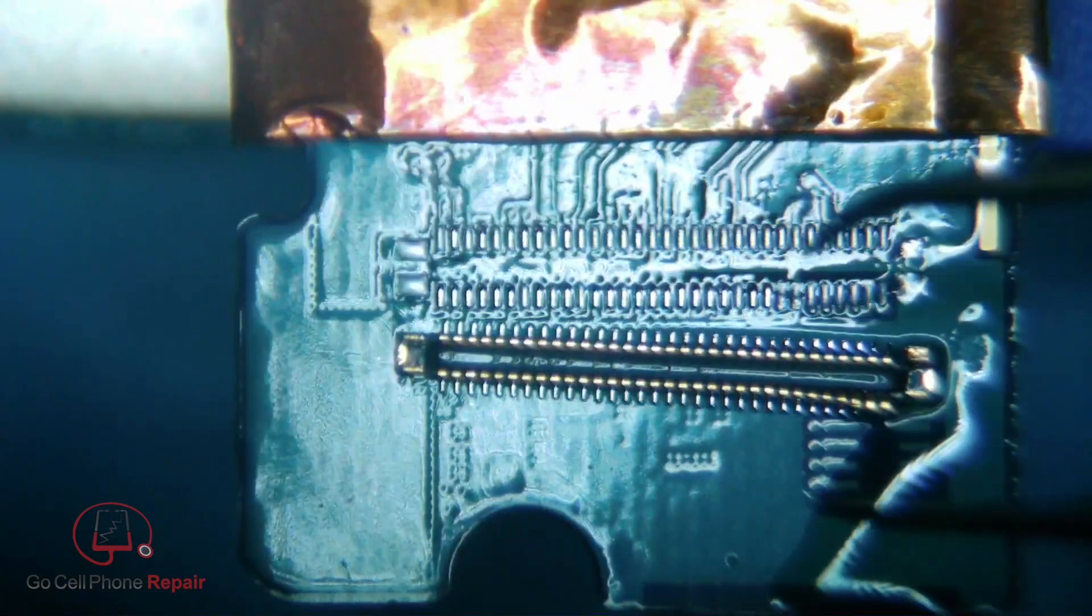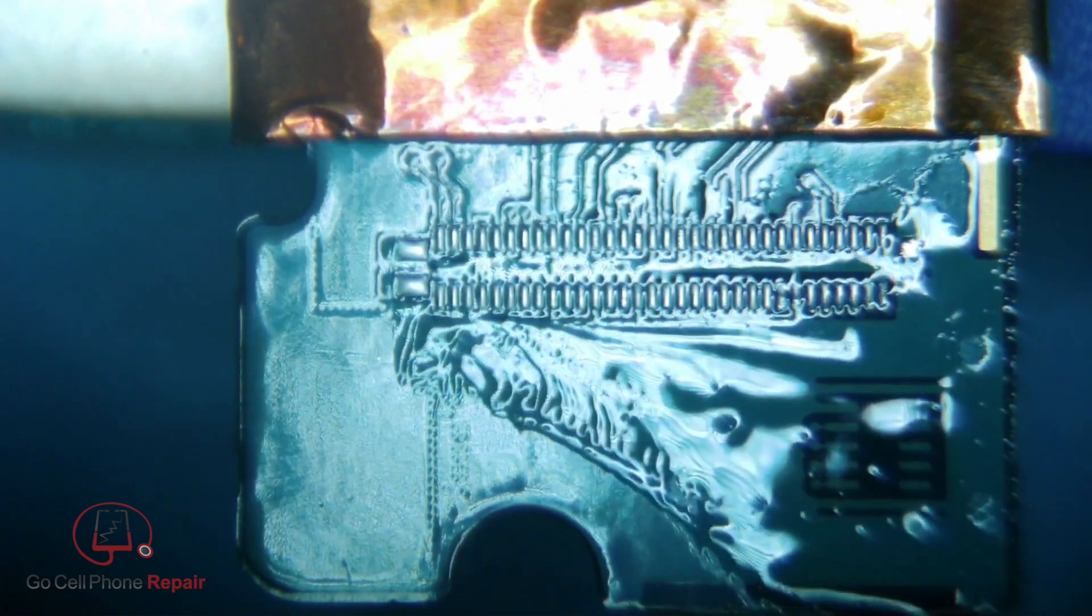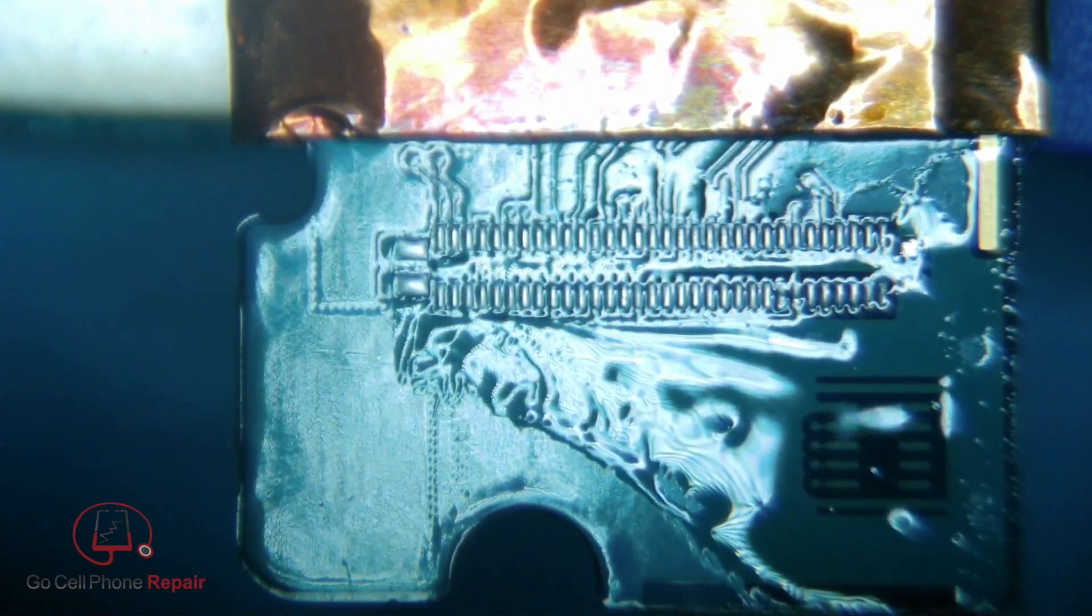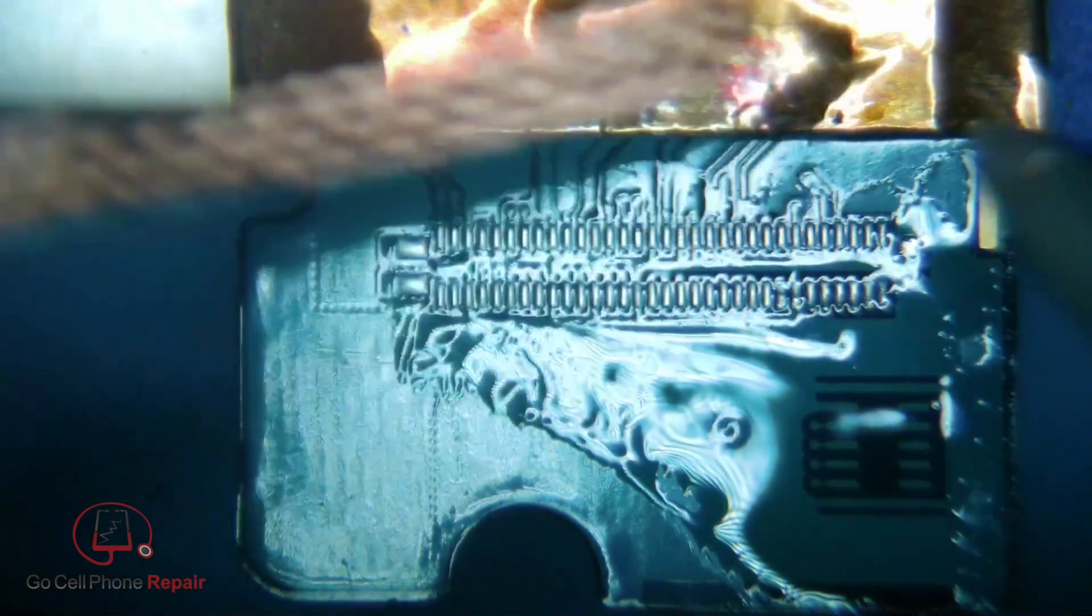Just make sure you have all those pins disconnected and at that point you can take your old part off and we'll get the old solder removed from here, clean this up, and then get our new connector installed.